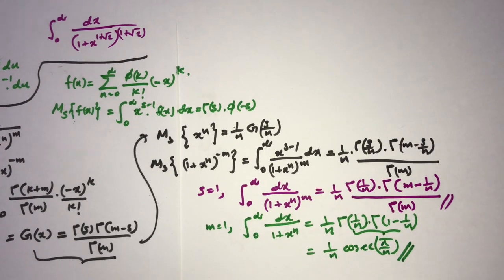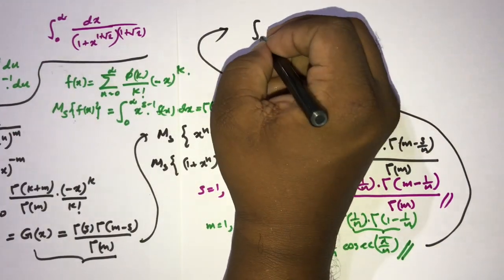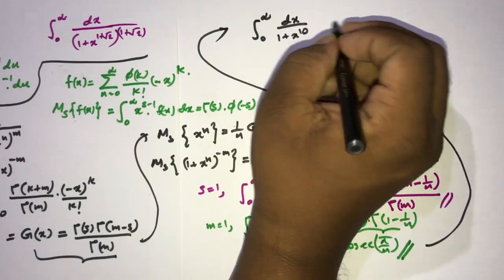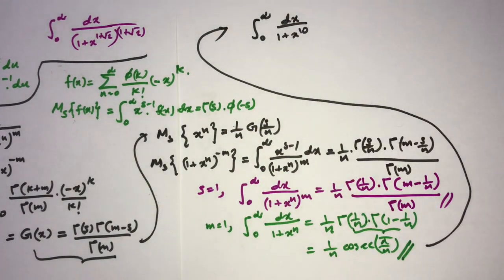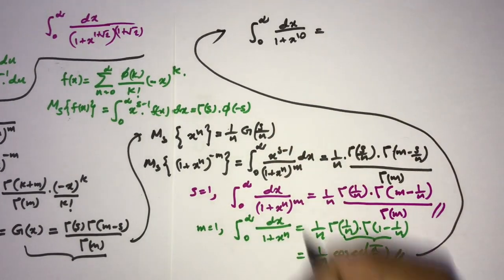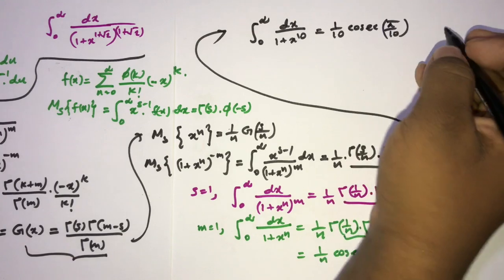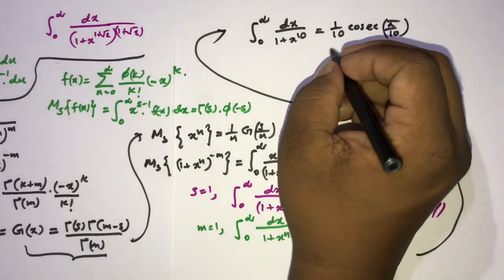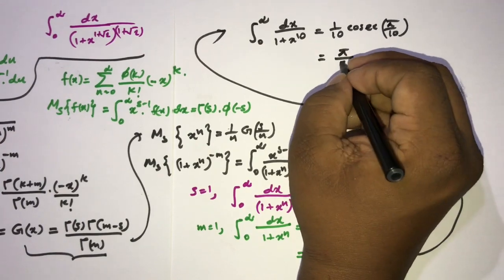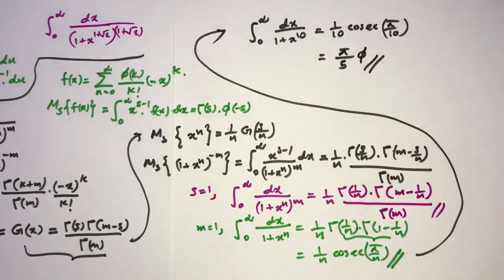Here is an interesting special case: the integral from 0 to infinity of dx over (1 + x)^10 equals (1/10) · csc(π/10). Since csc(π/10) has a known closed form, simplifying gives π/(5φ), where φ is the golden ratio. Thank you for watching.